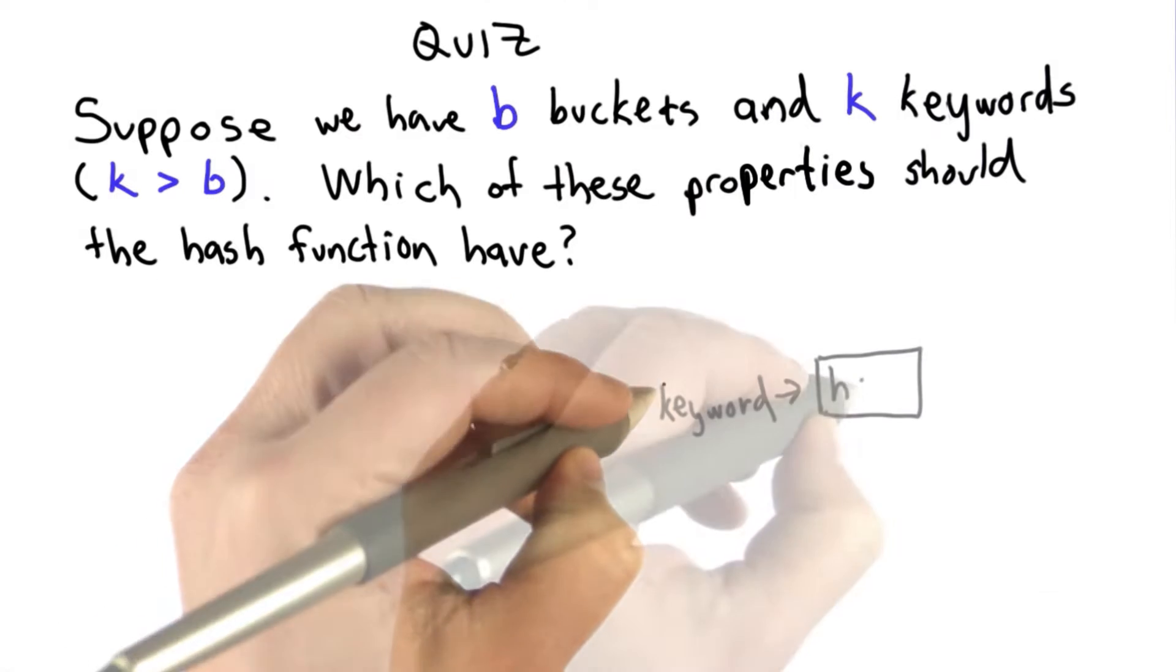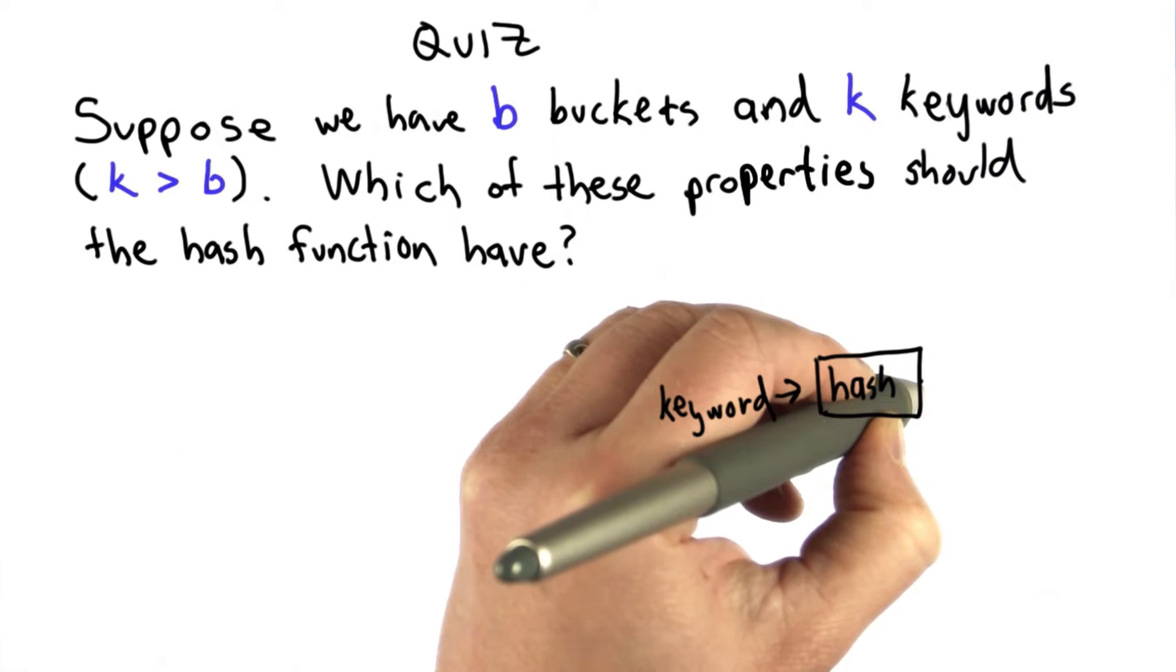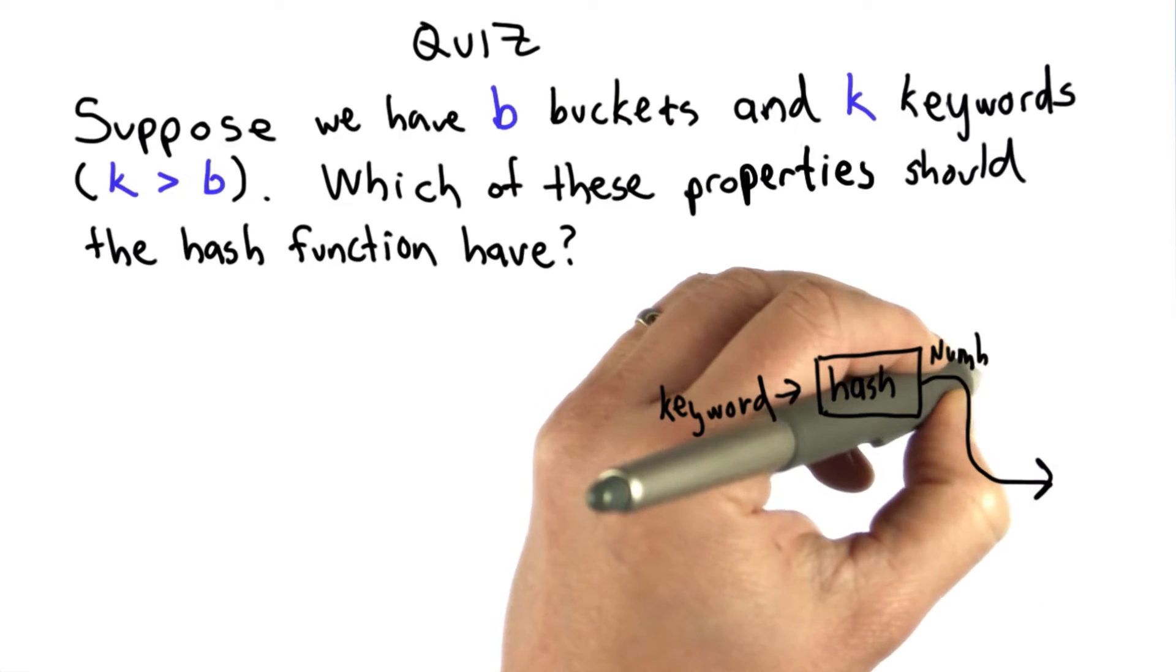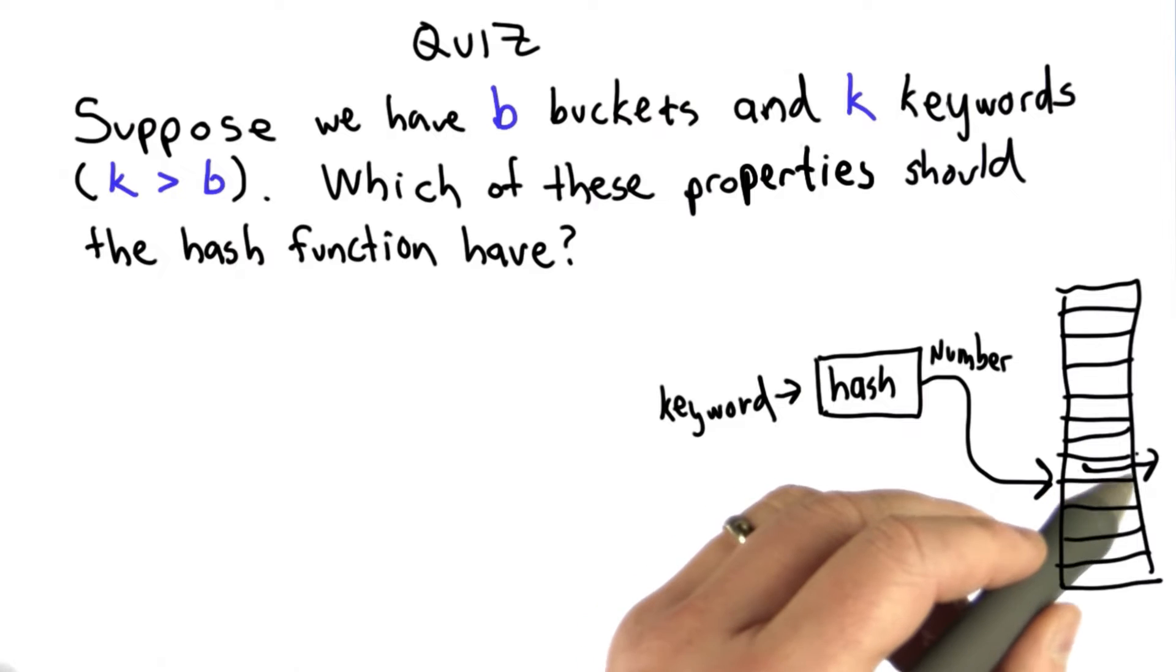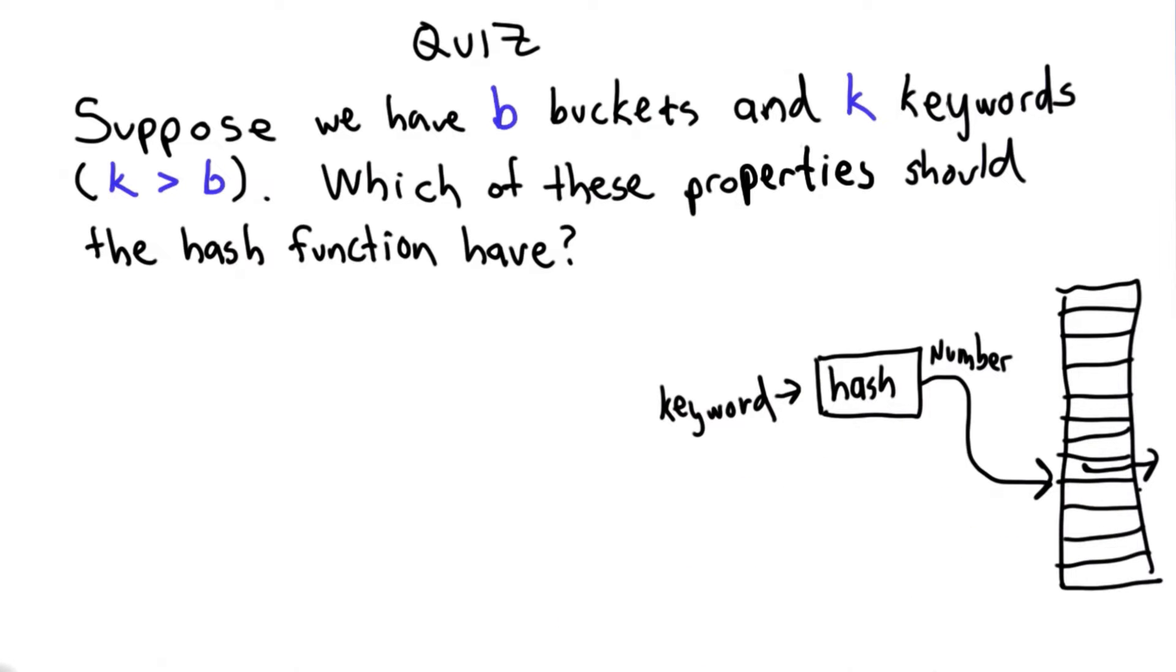And remember what the hash function is. It's a function that takes in a keyword, produces a number, and what that number does is gives us the position in the hash table, which is the bucket where that keyword would appear.